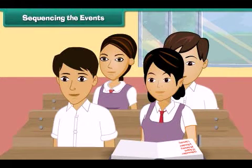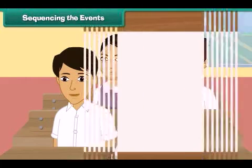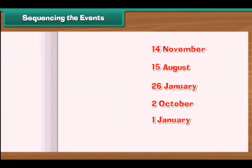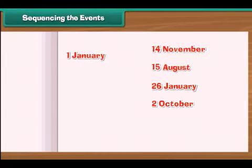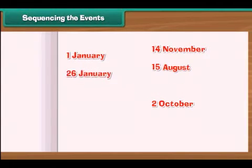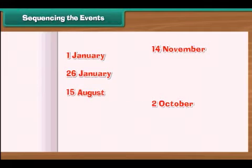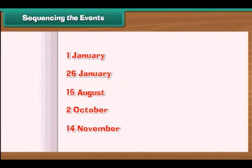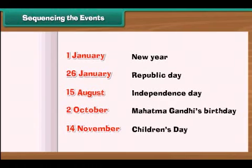Sequencing events: Anu is at school and has listed some important dates in a jumbled manner. Let us help her arrange the days in the order they come in the year: first New Year, then Republic Day, then Independence Day, followed by Mahatma Gandhi's birthday, and lastly Children's Day, which is the birth date of our first Prime Minister, Pandit Jawaharlal Nehru.